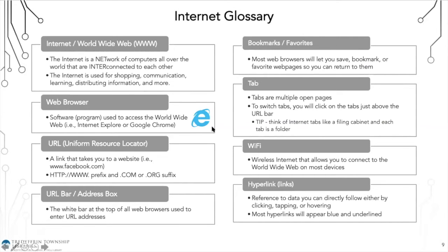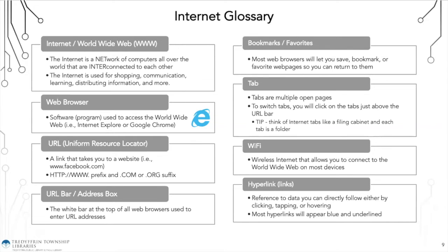Moving on to internet glossary terms. The internet can be called the internet or the World Wide Web — it is a network of computers all over the world interconnected to each other, used for shopping, communication, learning, and distributing information. A web browser is the program used to access the World Wide Web. The major web browsers are Internet Explorer, Google Chrome, Firefox, and Safari. Safari is Mac only.